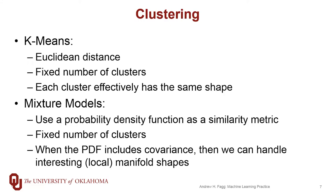The two classes of algorithms we'll focus on are k-means and mixture models with expectation maximization. With k-means, we use a Euclidean distance metric, a fixed number of clusters, and each cluster has a spherical shape. For mixture models, we don't have a distance metric per se, but a similarity metric based on a probability density function — in our case, a multi-dimensional Gaussian. With these approaches we still have a fixed number of clusters, but when we have interesting PDFs with covariance, we can handle not only circles and ellipses but also flat manifolds that are one- or two-dimensional. Let's go ahead and start with k-means clustering.